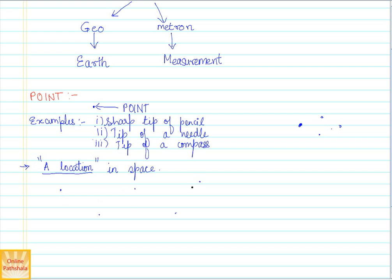Now, how do we distinguish between all these points? Visibly they are in different locations, but we still need a way to differentiate them. So what we do is associate a letter of the alphabet with each point. For example, this is point A, this is point B, this one can be named X, and another Z. When we have multiple points, we use letters of the alphabet to differentiate between them.